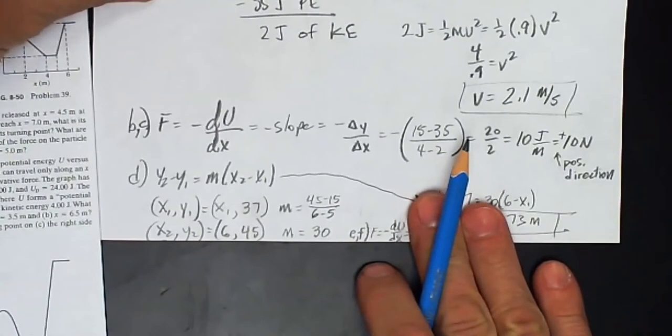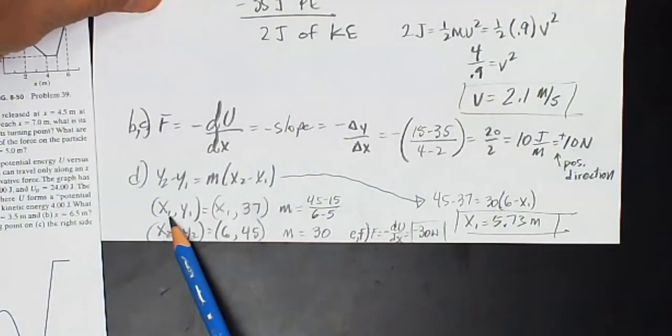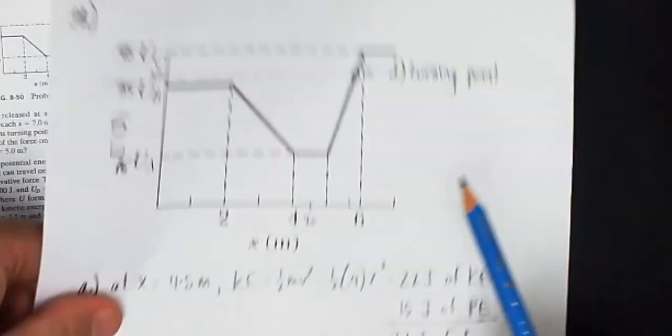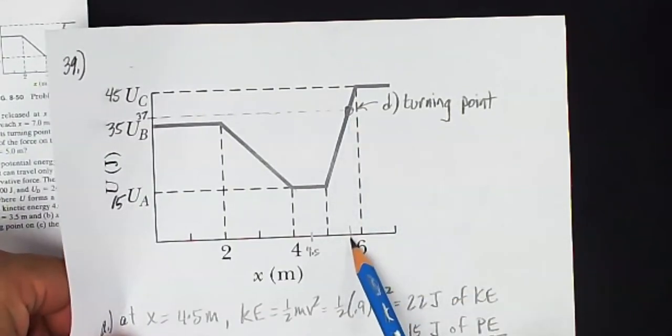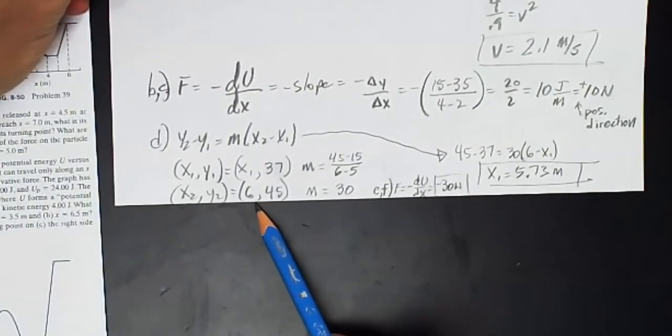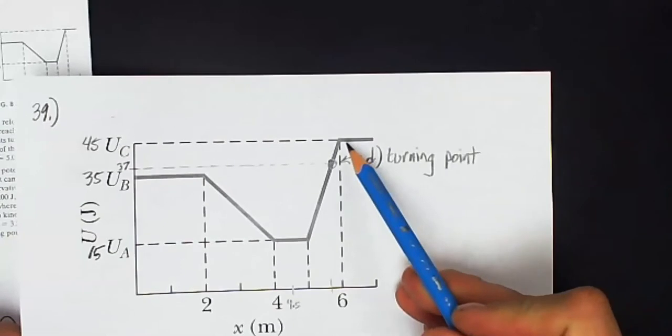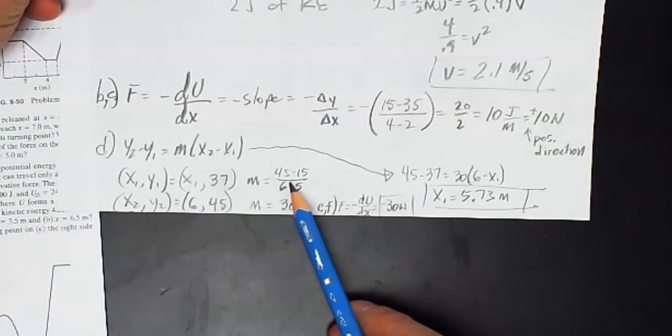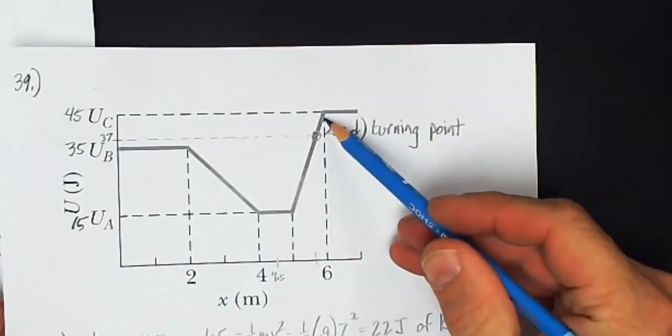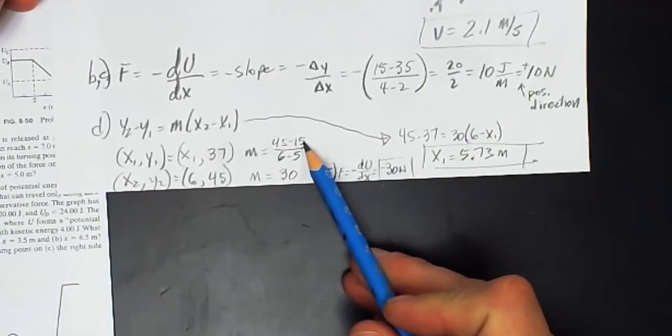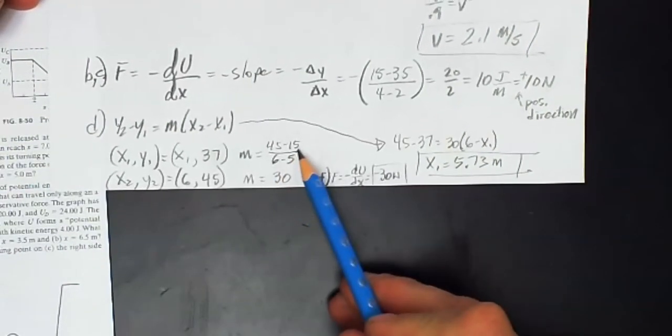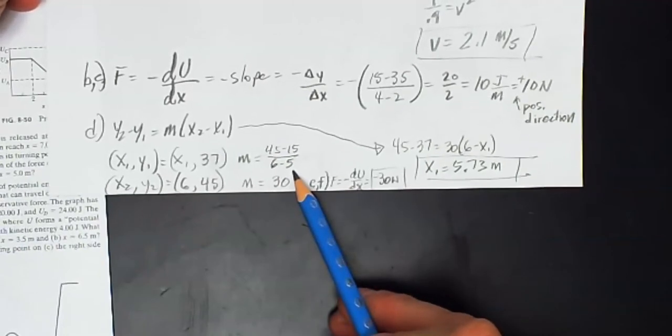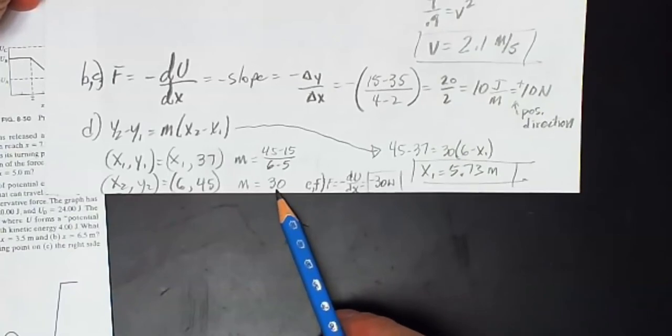I'm going to use the equation for the point-slope intercept. My first point is x comma 37. That's this point right there. x is unknown, and 37 is my y value. The second point on that line I'll use is 645. So that's this point right here. And the slope I can determine using the endpoints of here and here. So my two points are 5 comma 15 and 6 comma 45. There is my change in y over change in x. The slope of that portion of the graph is 30.